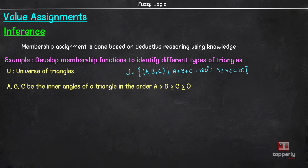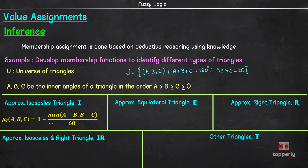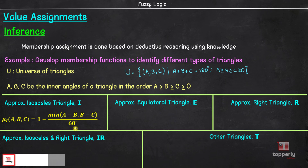Now let us say we need to identify the triangles as five types: approximate isosceles triangle I, approximate equilateral triangle E, approximate right triangle R, approximate isosceles and right triangle IR, and other triangles T. Using our knowledge about the geometry of triangles, we will make membership equations for each of these cases through trial and error. For approximate isosceles triangle, we can develop a membership function: mu_I(A, B, C) = 1 − min(A−B, B−C) / 60°. This membership function is valid as long as A ≥ B ≥ C ≥ 0. Please note that this equation is not developed based on pure mathematics — it is created based on experience in geometry.